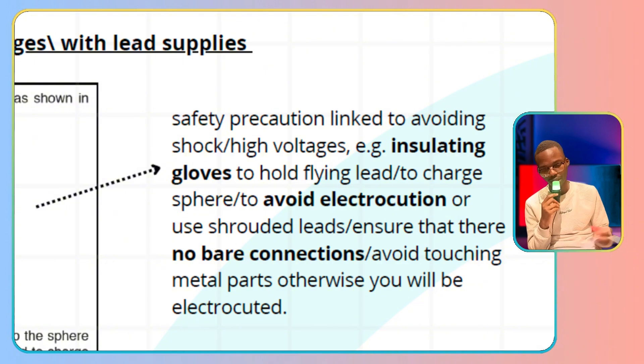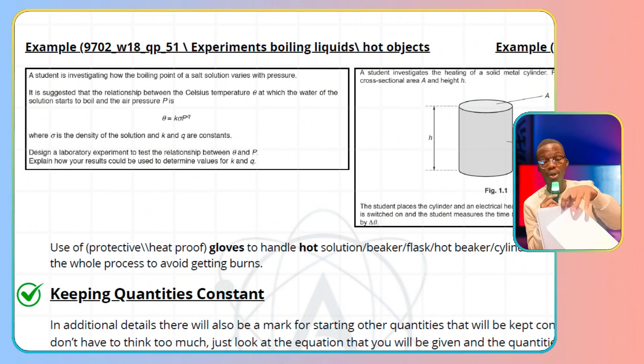We can have experiments with boiling liquids or hot liquids, or hot objects in general. You're going to have to use protective heat-proof gloves to handle hot solutions—a beaker, flask with hot solution, or a hot beaker, cylinder, or heater—during the whole process to avoid getting burned.